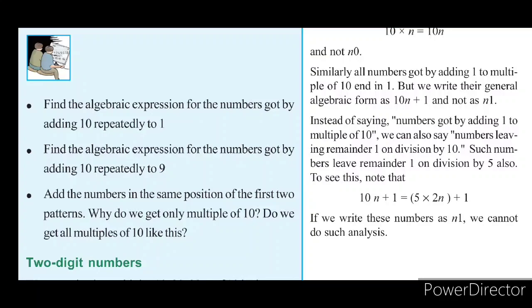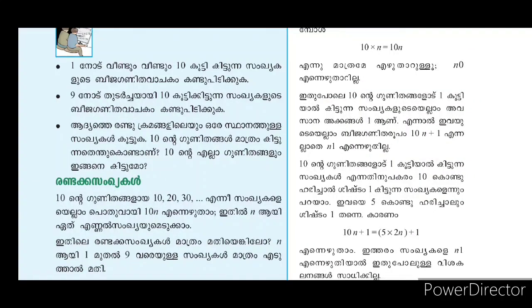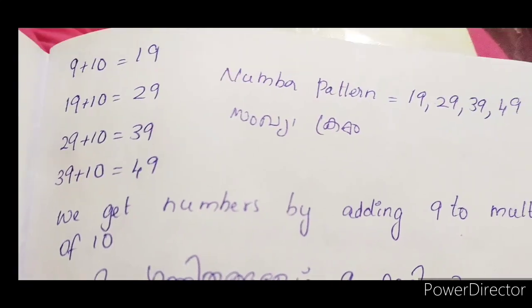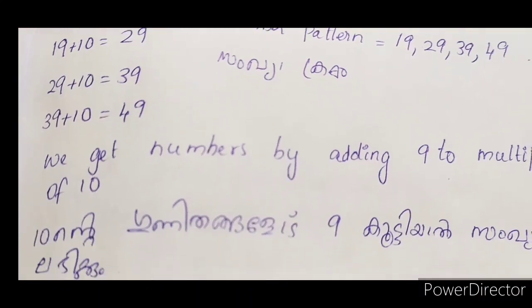The numbers are got by adding 10 repeatedly to 9. In the case of 9, we will add 10 to 9. So 9 plus 10 is 19, 19 plus 10 is 29, 29 plus 10 is 39. The number pattern is 19, 29, 39, 49.